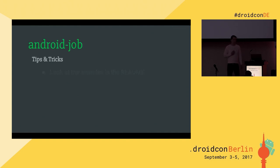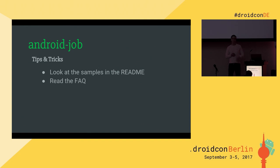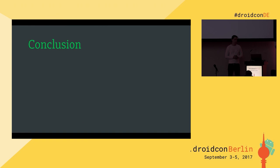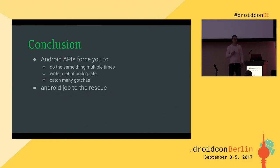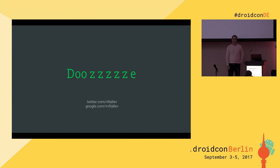Some last tips and tricks: there are really helpful samples, so look at them and check the readme. There's also an FAQ with even more questions. If you still can't solve your problem, feel free to create an issue and I'll try to help. Overall, what we've learned is that Android APIs force you to do the same thing over and over for multiple API levels with a lot of boilerplate code. The Android Job library comes to the rescue — it does all this heavy work for you so you can focus on your actual task. Thank you very much.